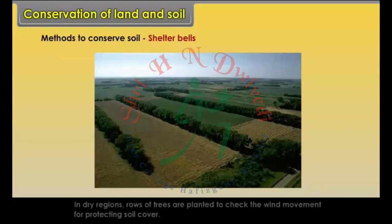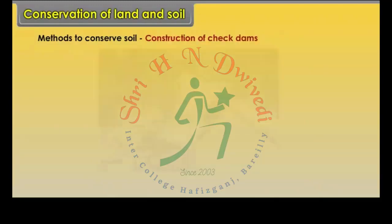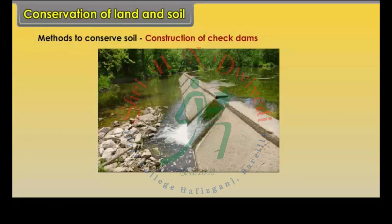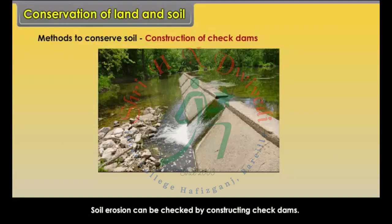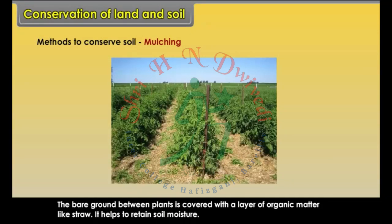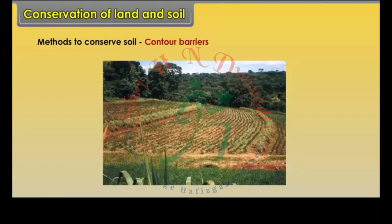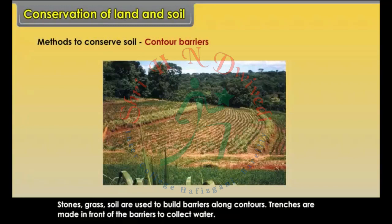Shelter belts: in dry regions, rows of trees are planted to check the wind movement for protecting soil cover. Construction of check dams: soil erosion can be checked by constructing check dams; it helps to prevent the speed of gullies. Mulching: the bare ground between plants is covered with a layer of organic matter like straw; it helps to retain soil moisture. Contour barriers: stones, grass and soil are used to build barriers along contours; trenches are made in front of the barriers to collect water.